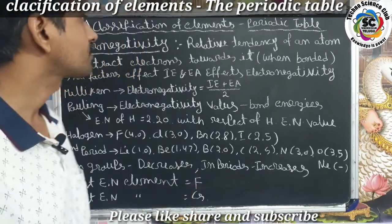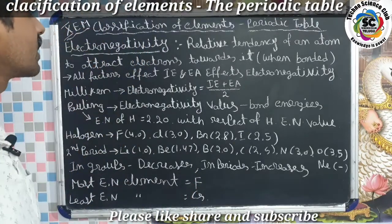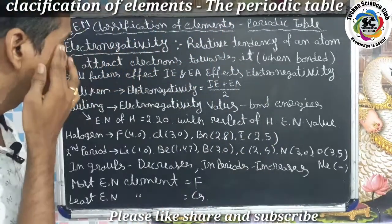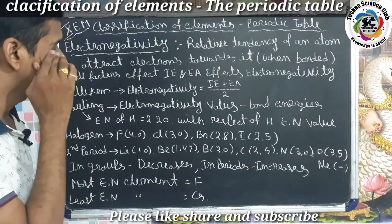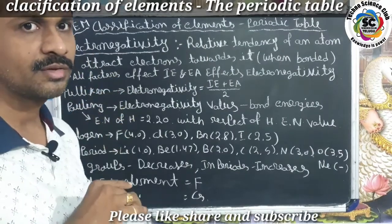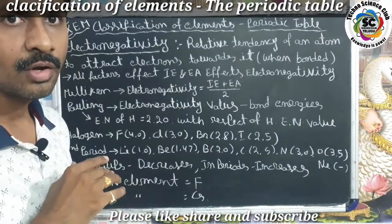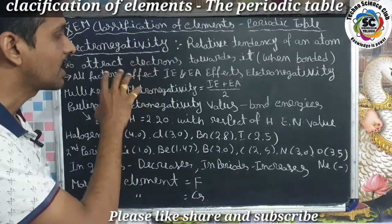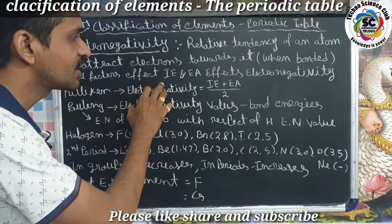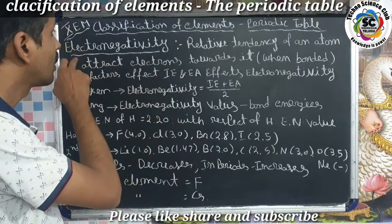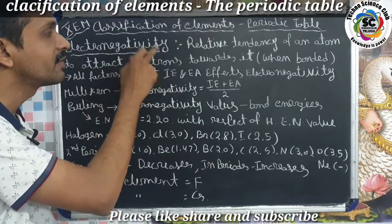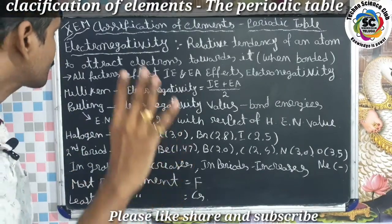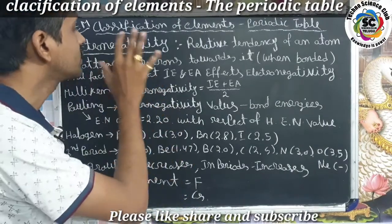Welcome back friends. In tenth class English medium, classification of elements and the periodic table — in this lesson, in properties of elements, there are six types of properties: valency, atomic radius, electron affinity, ionization energy, and electronegativity. Electronegativity is also one of the properties of an element.